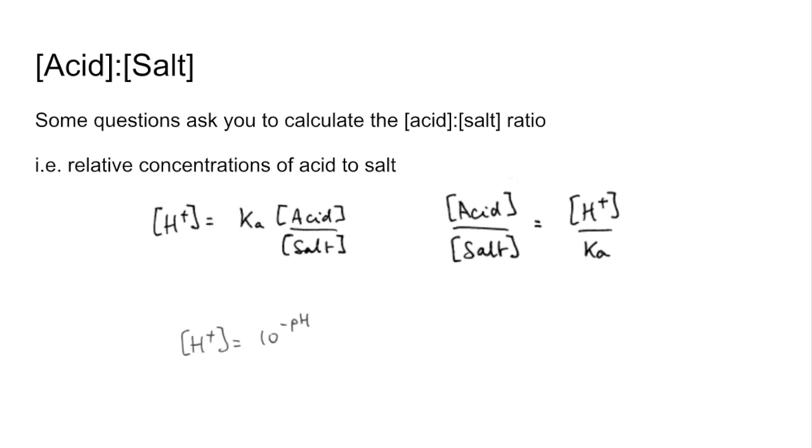Now remember they could give you the pH of the buffer so you would need to convert that to an H plus concentration. So H plus concentration is 10 to the minus pH or they might give you the pKa of the weak acid that's in the buffer and you would need to calculate Ka from 10 to the minus pKa.